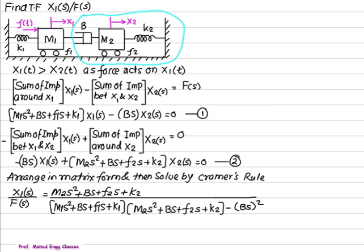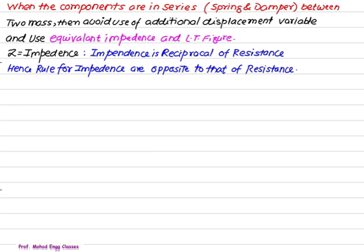Number of times we come across the components like spring and damper, they are in series. And if they are in series, then you require an additional displacement variable. But if you use the additional displacement variable, we require the number of equations will be increased, and that becomes difficult to solve. In that case, you have to use the impedance method.